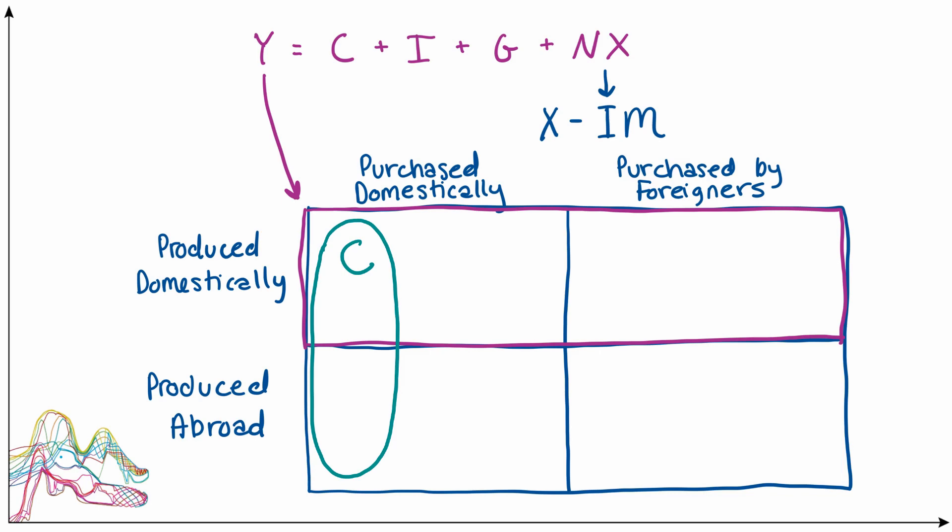Investment is stuff that usually businesses buy in order to make more stuff. And like I said earlier, also new residential construction counts as investment. But if we're thinking how businesses buy their stuff to make more stuff or their capital, roughly speaking, they can either get their machines that are produced in the U.S. or they can get machines that are produced elsewhere. So likewise, we can say that our investment category would span both the produced domestically and produced abroad buckets. But all of this investment, because we're talking about domestic investment, is in fact purchased domestically.